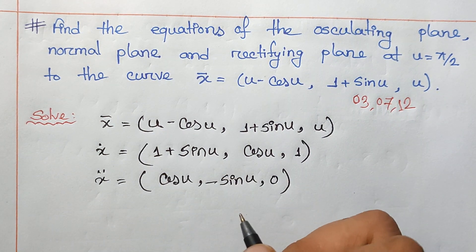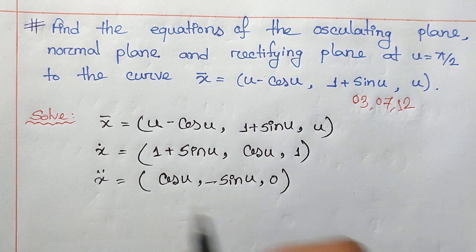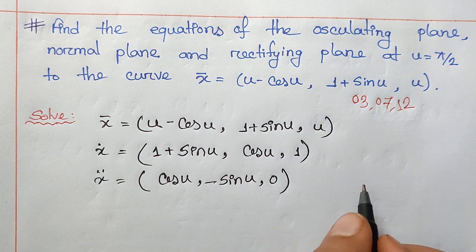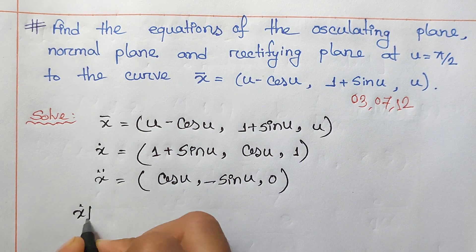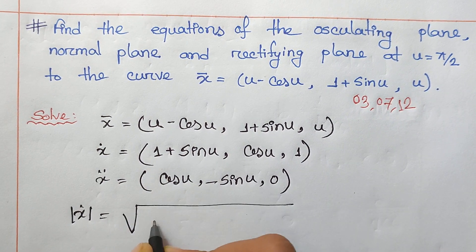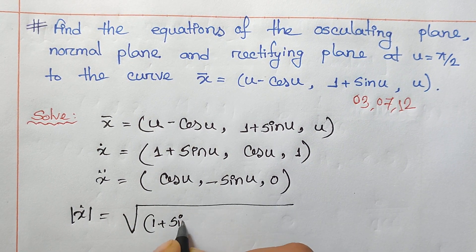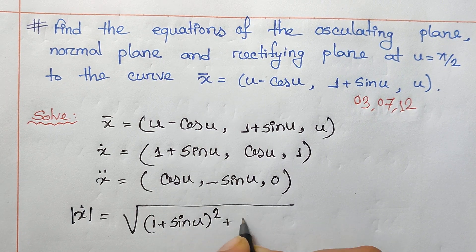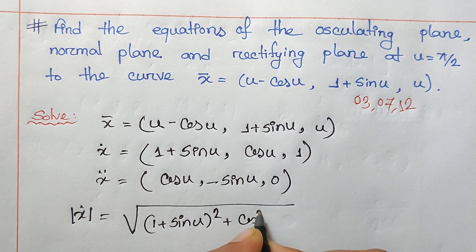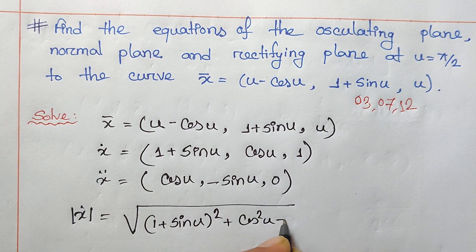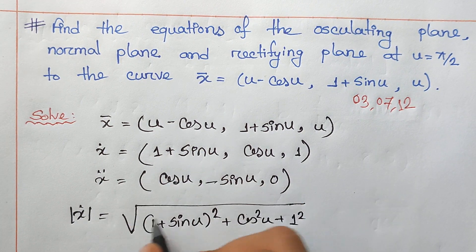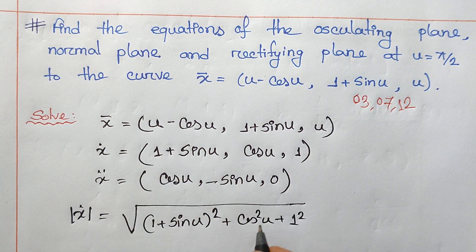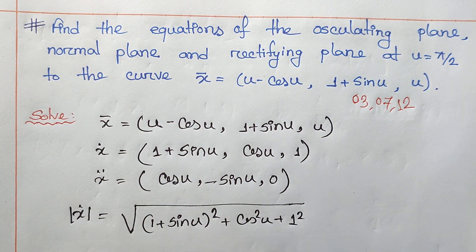So I'm going to say: the x dot value — x dot — is 1 plus sin u, plus cos squared u, plus 1 squared. The value is equal to...